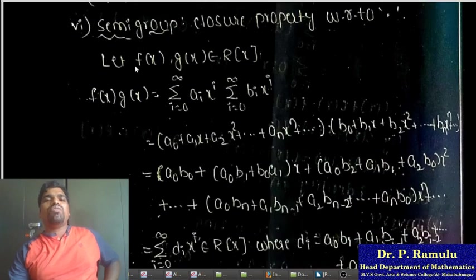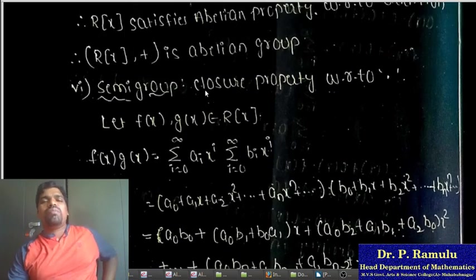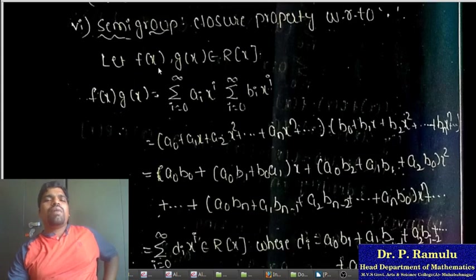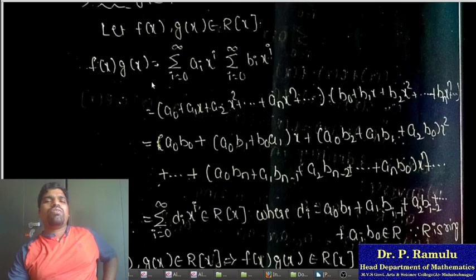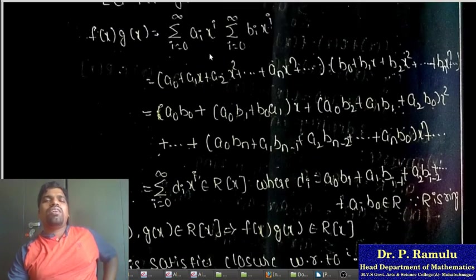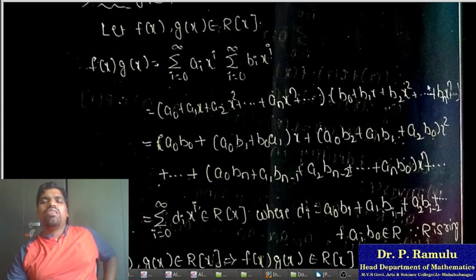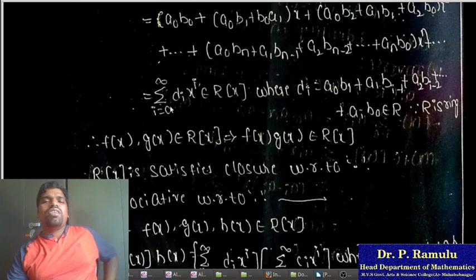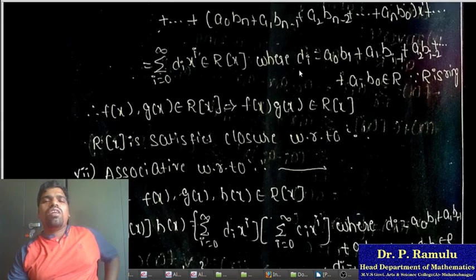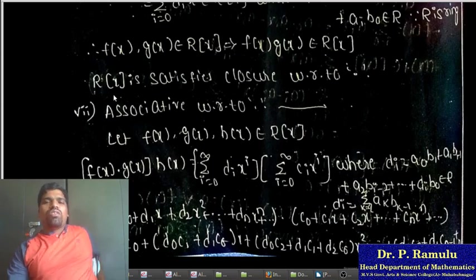Next, to show R[x] with dot (multiplication) is a semigroup: we verify closure and associativity. For f(x), g(x) in R[x], multiplying gives sum d_i x^i where d_i = a_0 b_i + a_1 b_{i-1} + ... + a_i b_0. Since R is a ring, d_i belongs to R, so f(x)·g(x) belongs to R[x]. Therefore R[x] satisfies the closure property with respect to multiplication.